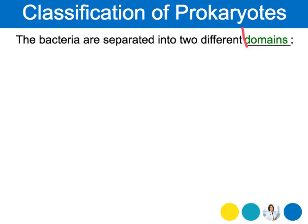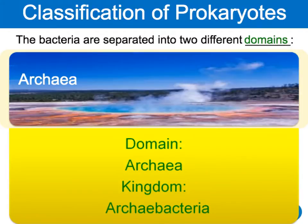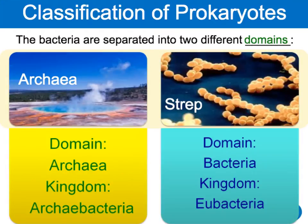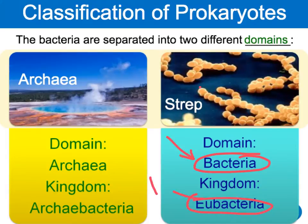Bacteria are separated into two different domains. Domains are like the biggest classification level — bigger than kingdoms like plants, animals, or fungus. We've got Archaea, and the kingdom Archaea contains the archaeabacteria. Archaea means ancient. And we get the domain of Bacteria, which was the first domain we actually found, containing our eubacteria.